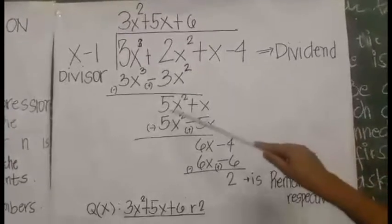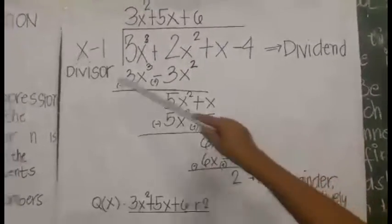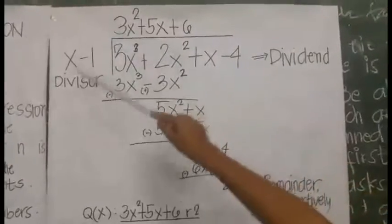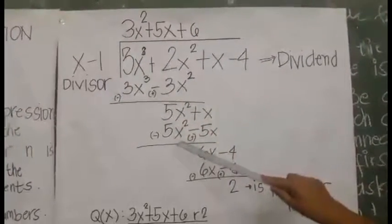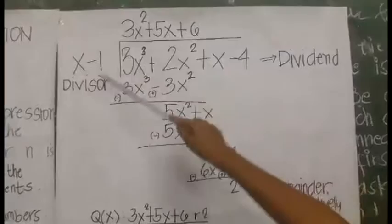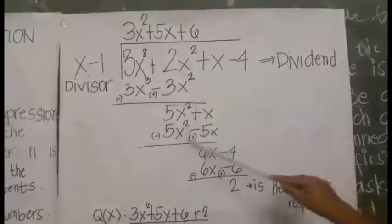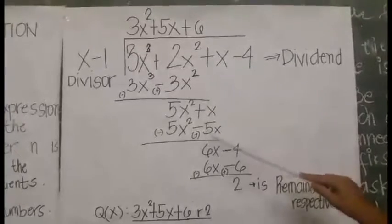Bring down x. 5x squared divided by x equals 5x. 5x times x equals 5x squared. 5x times negative 1 equals negative 5x. Change the sign and proceed to addition.